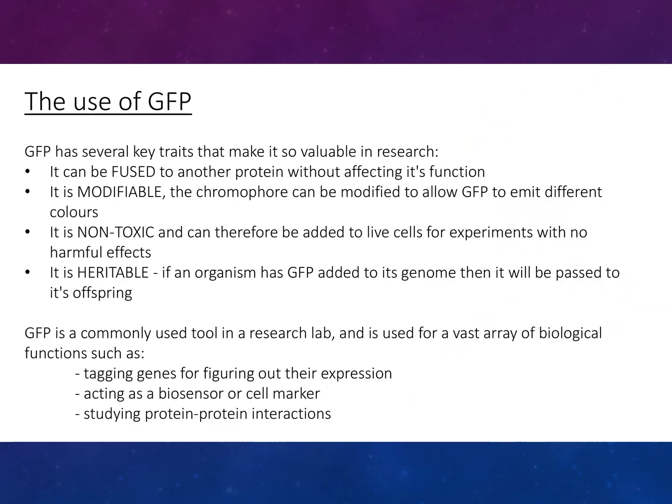The use of GFP has several key traits that make it so valuable in research. It can be fused to another protein without affecting its function. It is modifiable — the chromophore can be modified to allow GFP to emit different colours. It is non-toxic and can therefore be added to live cells for experiments with no harmful effects. It is heritable: if an organism has GFP added to its genome, it will be passed on to its offspring.